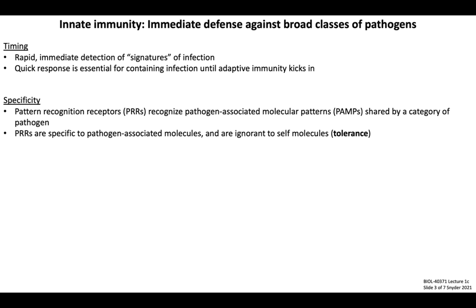The specificity of innate immunity: innate immune responses are mounted against broad classes of pathogens, and this is enabled through pattern recognition receptors, or PRRs, that recognize pathogen-associated molecular patterns, or PAMPs. PRR activation induces stereotyped responses against molecular motifs shared amongst classes of pathogens — for example, RNA viruses, although that group encompasses many individual types of viruses.